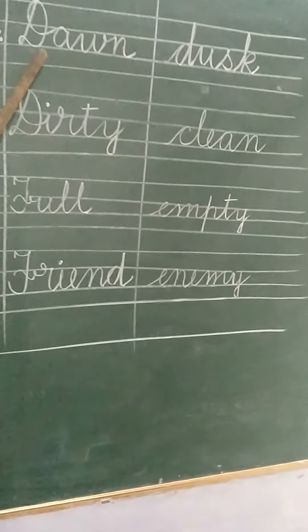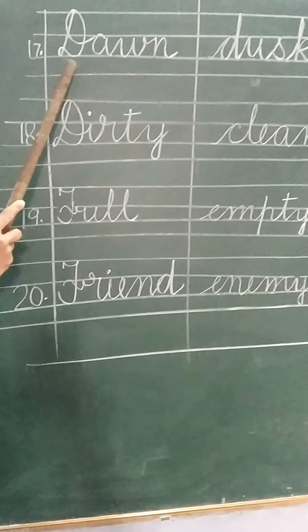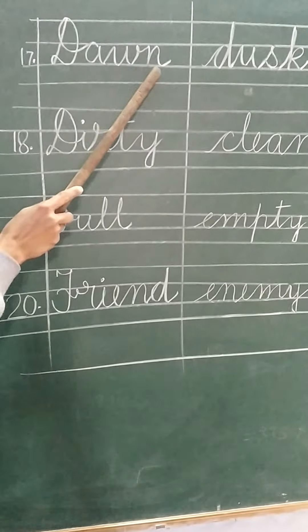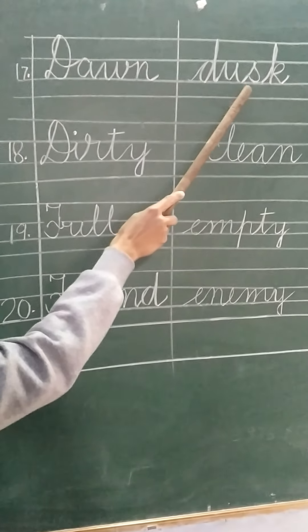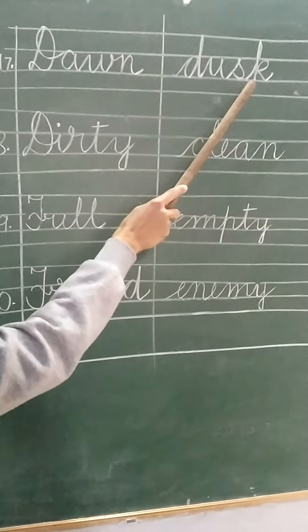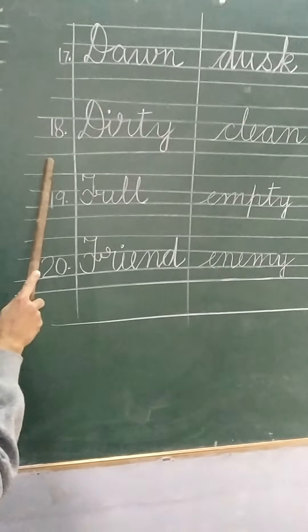Number 17. Dawn. Dawn is the time of morning. D-A-W-N dawn. Dawn is the time of morning. Dusk. D-U-S-K dusk. This is the time of evening. D-U-S-K dusk.